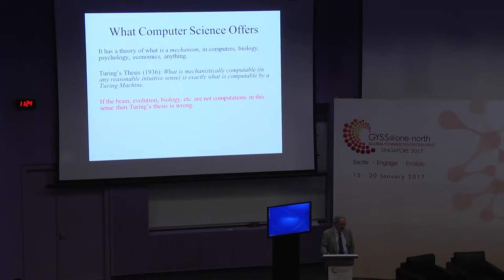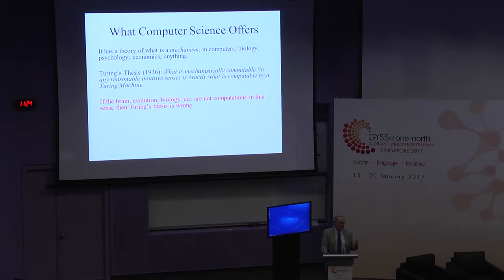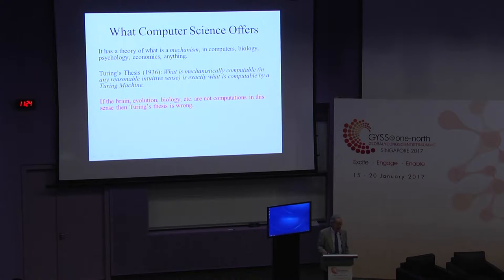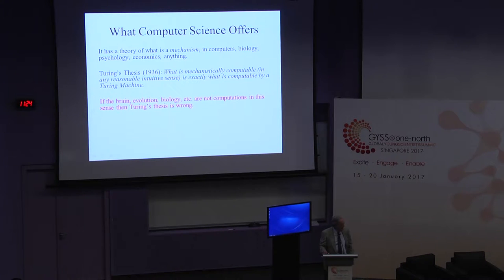From the beginning, computer science has had an incredibly ambitious program: to explain mechanisms in all areas of science. Maybe it failed, but at the moment it's one of the best-accepted theories in science.